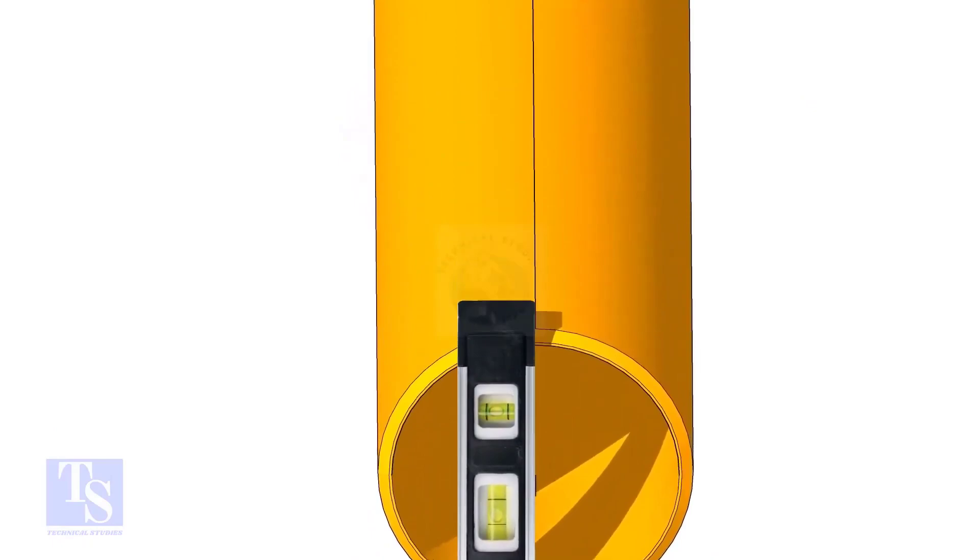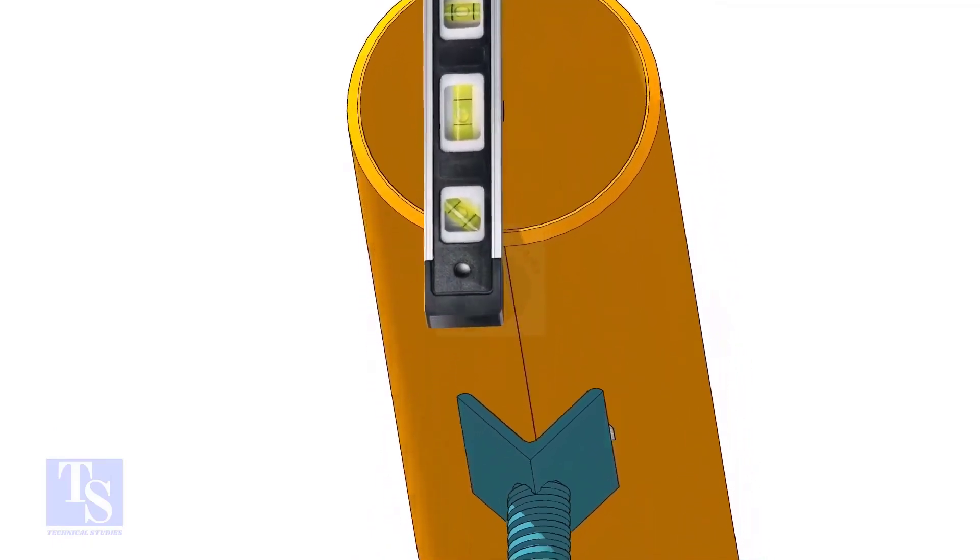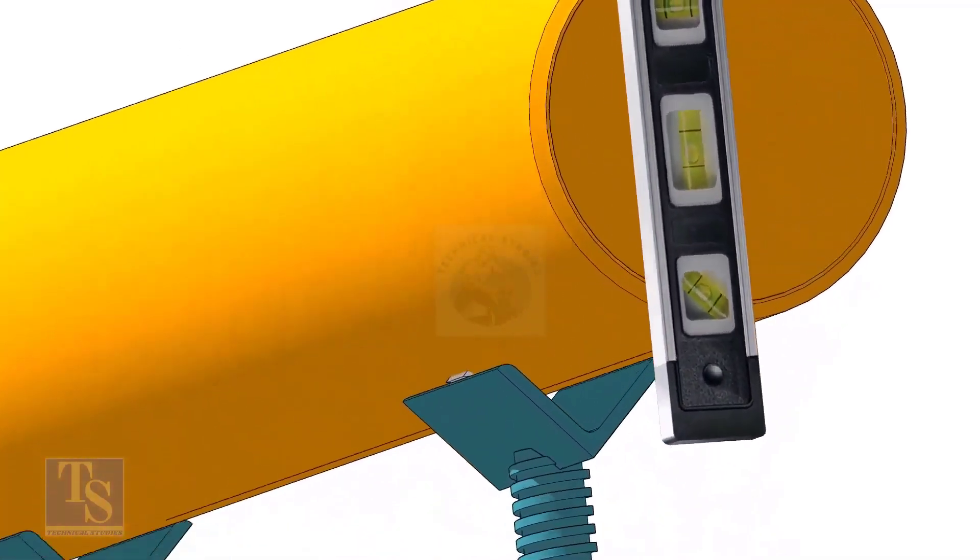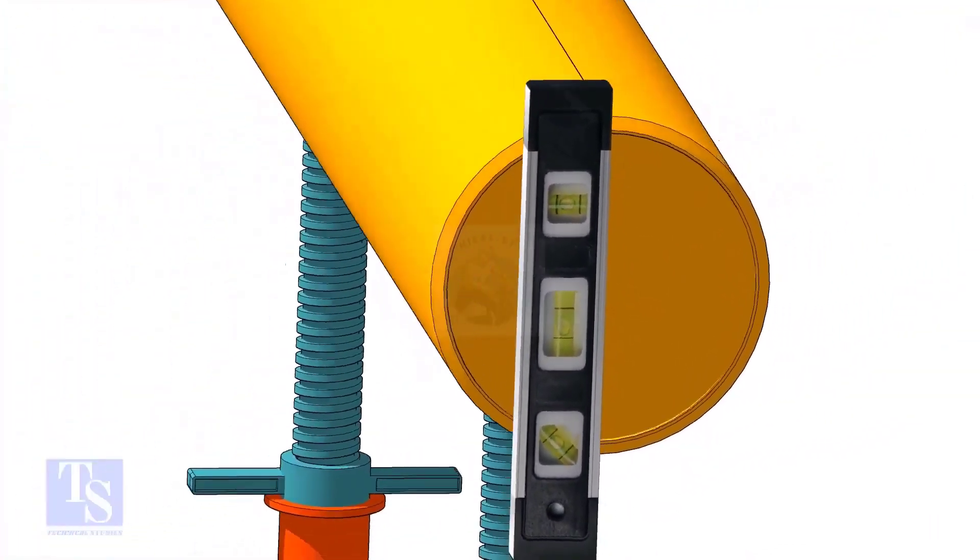Level the pipe horizontally and vertically as shown. After leveling, arrest the pipe to stop it from rotating.